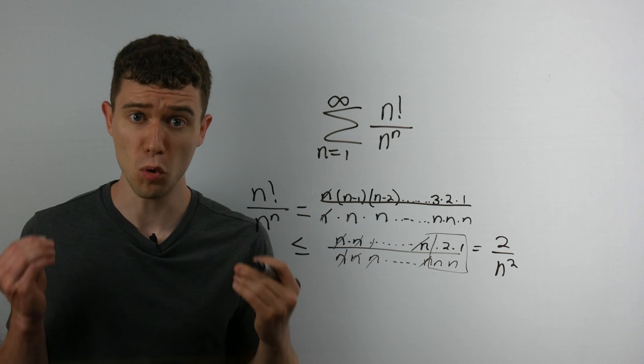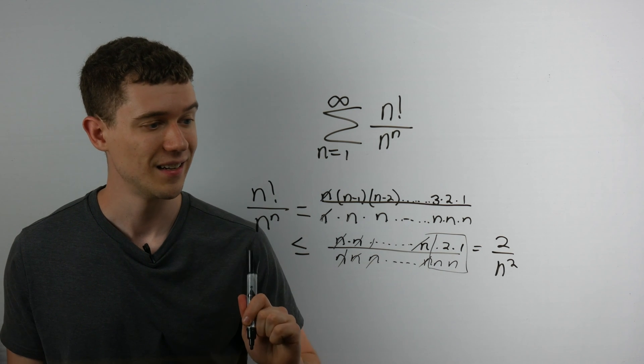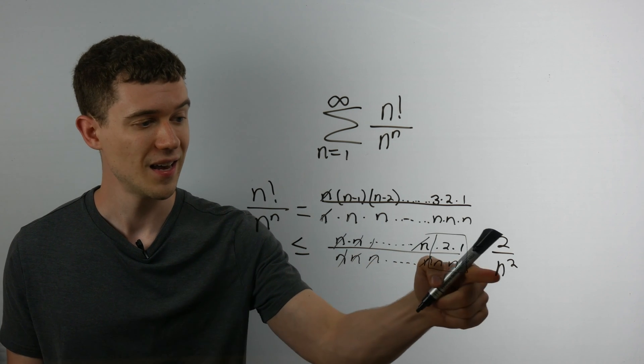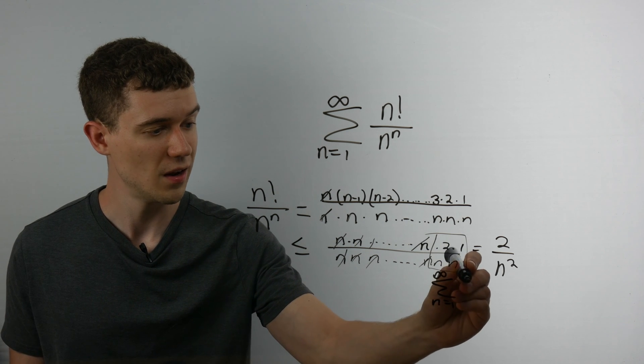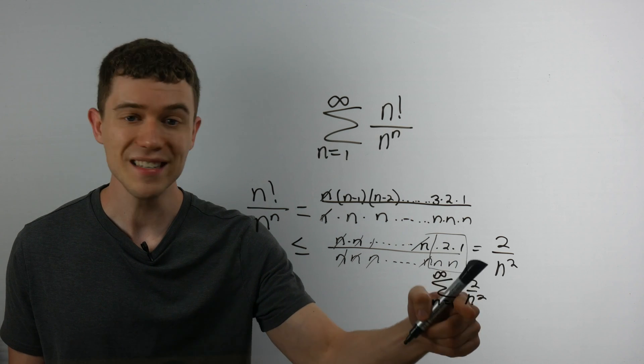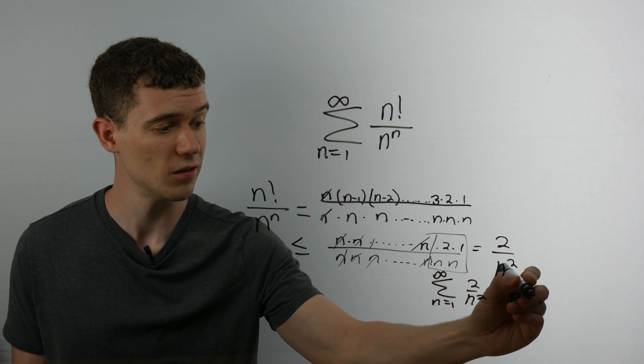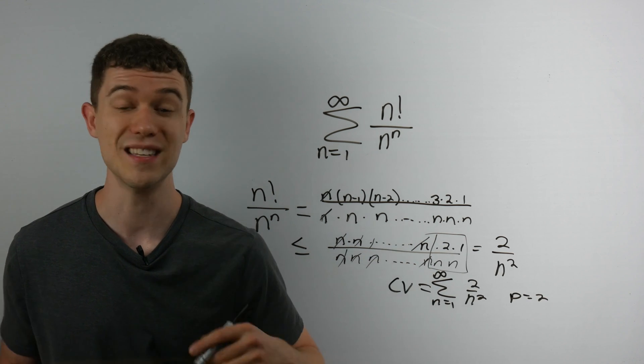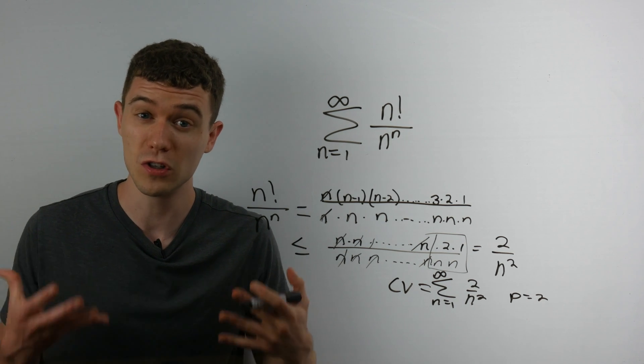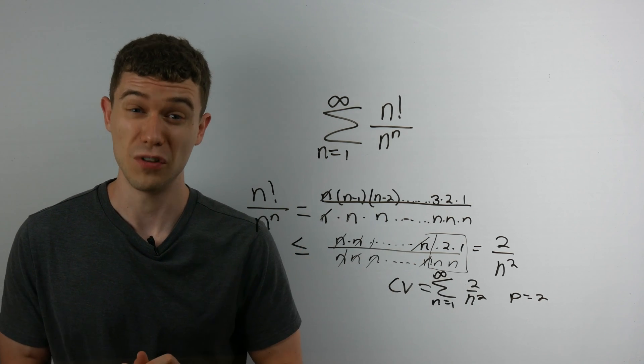Why is that important? Well, this, if I write it as a series, the sum from n equals 1 to infinity of 2 over n squared, this is a p series. This is a p series with p equaling 2. So we know that this series is a convergent series. I don't know what it converges to, but it converges.